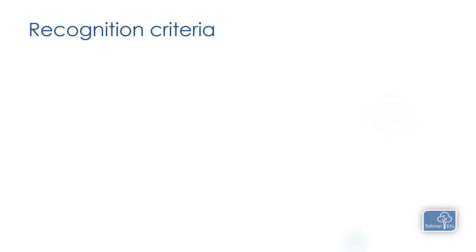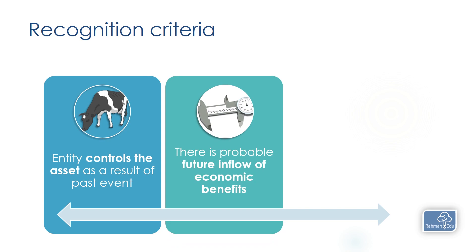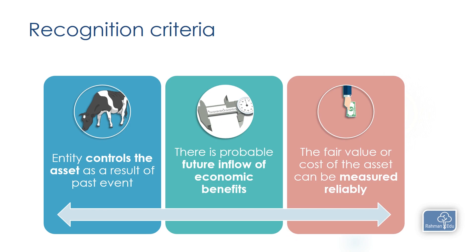How do you recognize a biological asset? There are three conditions, all of which must be fulfilled. First, the entity controls the asset as a result of past events — for example, you purchased the cow, and when the cow gives birth to a calf you control the calf too. Second, there is probable future inflow of economic benefit — you can sell, consume, or produce agricultural produce using the asset. Third, the fair value or cost of the asset is reliably measurable.